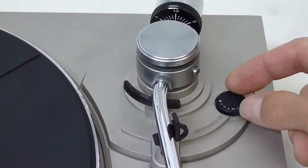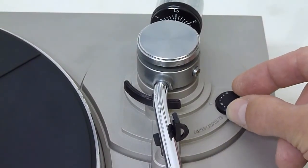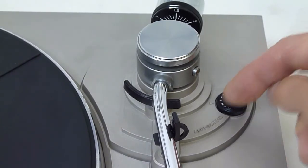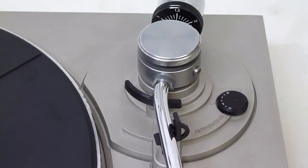Now the anti-skate setting should be set the same. So for a 1.5 gram tracking weight, 1.5 anti-skate. The anti-skate control compensates for the natural bias of the arm to move towards the center of the record.